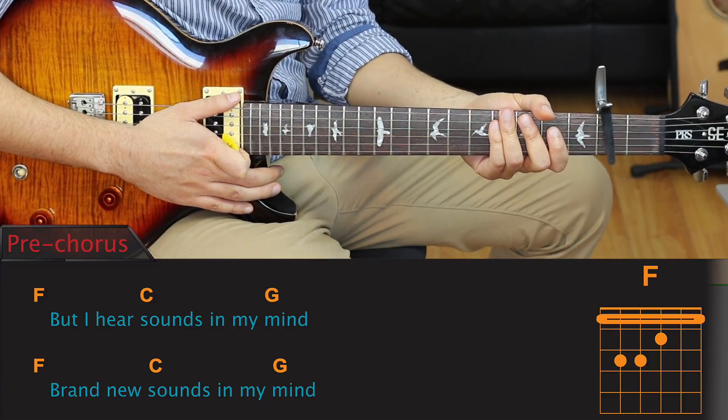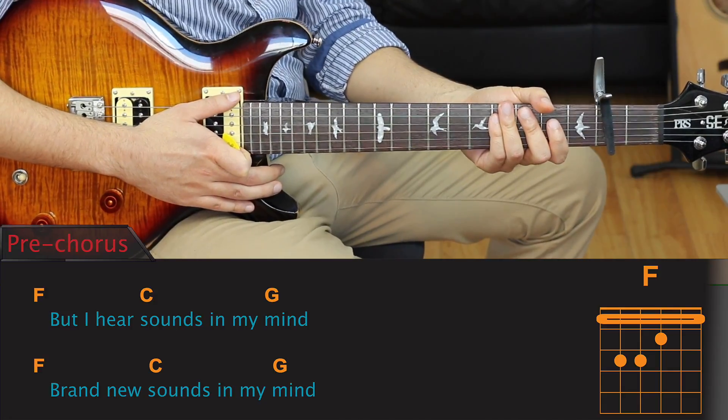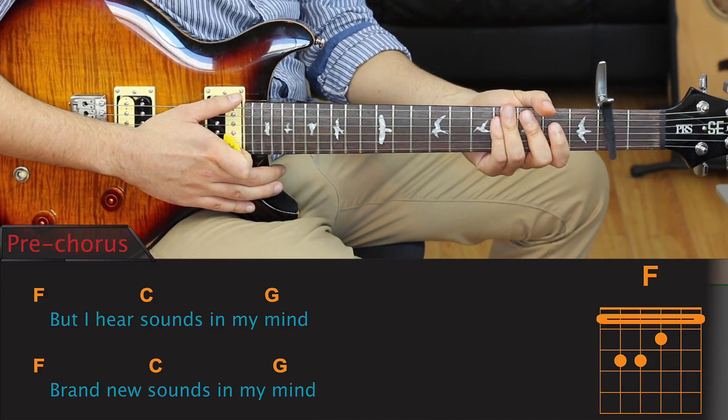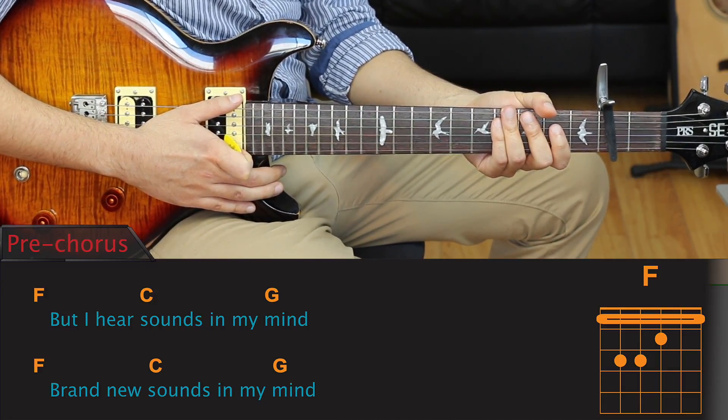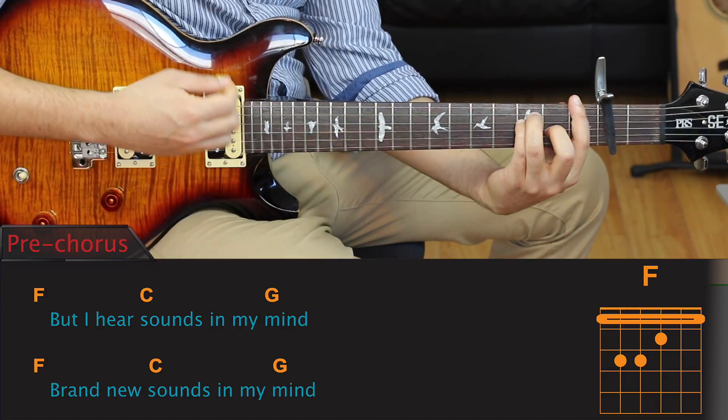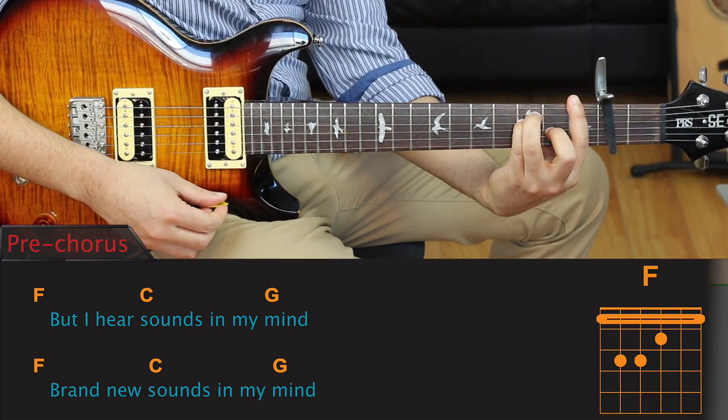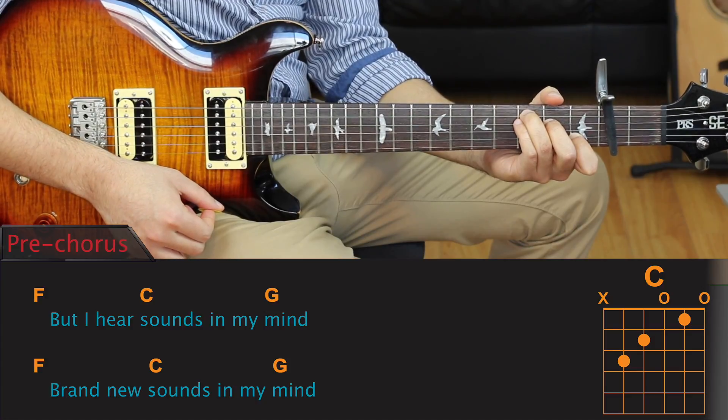Now, there are a lot of different ways that you can approach this section. The method that I'll be showing you today is one of the easier ways to play it. We're only going to be using three chords: an F, a C, and a G.